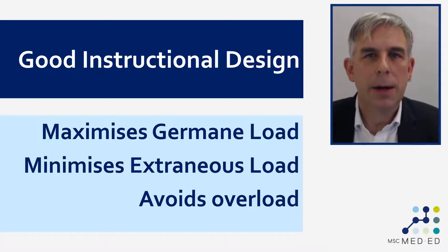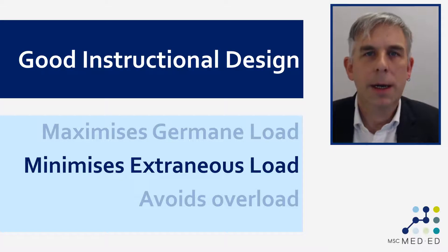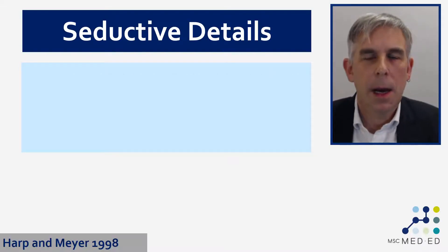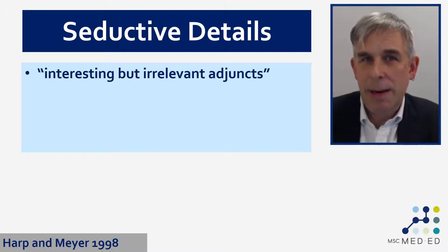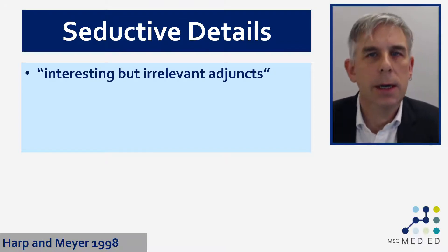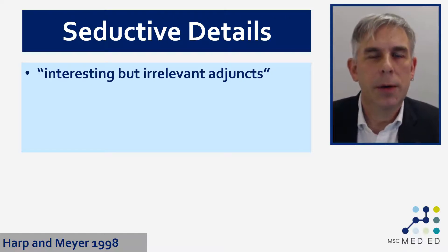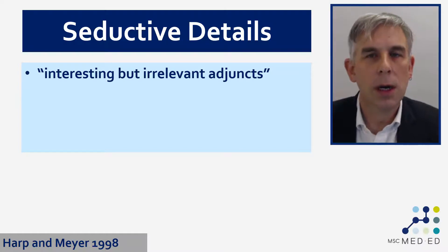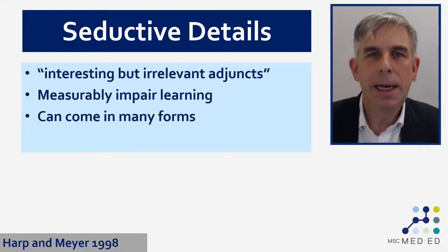Now I'm going to talk about sources of extraneous cognitive load. A lot of these are very common and things you'll find in everyday teaching materials. Many of them come under the heading of seductive details — interesting but irrelevant adjuncts to teaching, little decorative trinkets that we might put on teaching materials to try and make them more engaging, but are actually just distracting and can act as a source of extraneous cognitive load. They measurably impair learning and can come in many different forms.